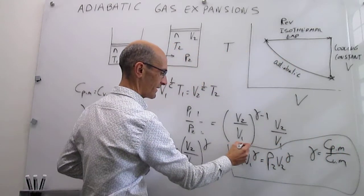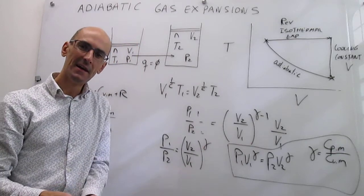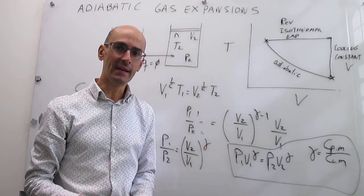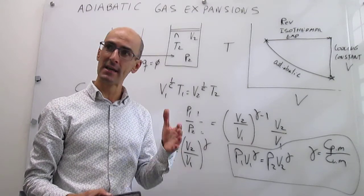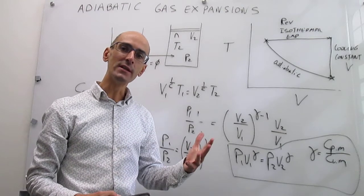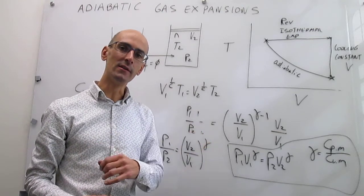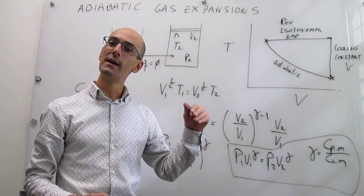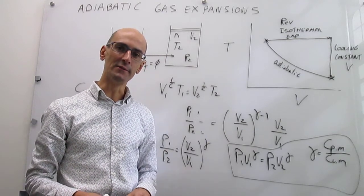We're done with adiabatic gas expansions. We have seen the foundations: what an adiabatic gas expansion really is, how to calculate the work, how to calculate internal energy. And then we've seen relationships between the initial variables that define the physical state—pressure, temperature, volume—and the final variables of that physical state.